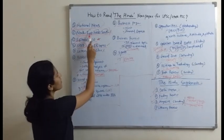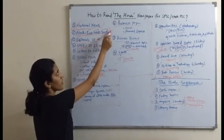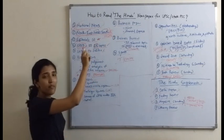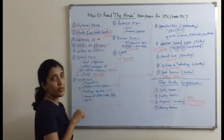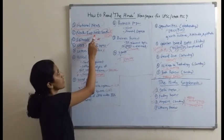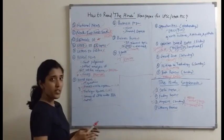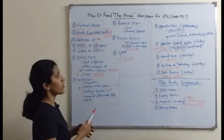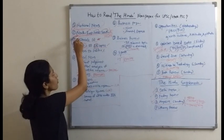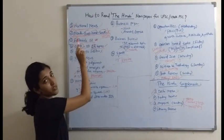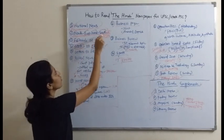The second section is North, East, West, South — basically the state news coverage, which we can completely skip or we have to be selective. We have to decide which news is important from the examination point of view. If some state's scheme is there or an analysis of a state scheme is given, we can read it and use it as an example, or it could even be asked in the pre-examination. So this section is not that important overall.